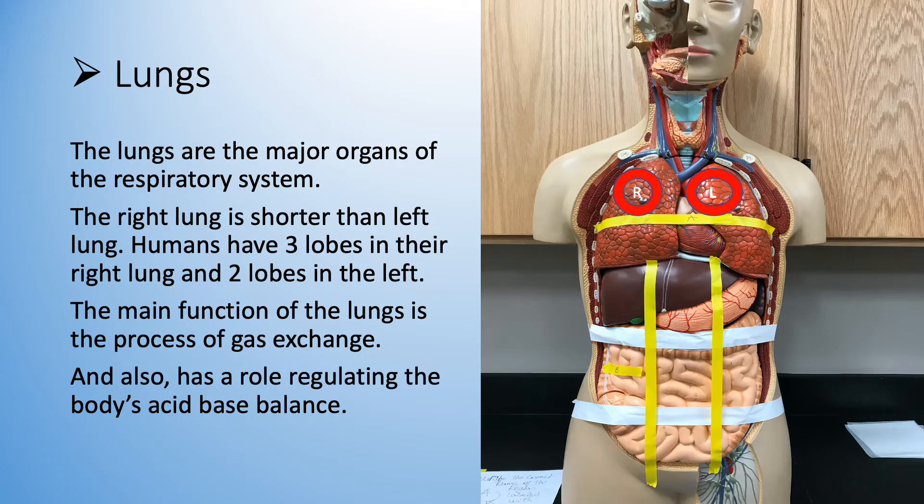The lungs are the major organs of the respiratory system. You may see the lung labeled as R for right and L for left lung, pointed out with red circle on the torso model. Right lung is shorter than the left due to sparing space for the liver, located just right below it. Humans have three lobes in their right lung and two lobes in the left. The main function of the lungs is the process of gas exchange and also regulating the body's acid-base balance.